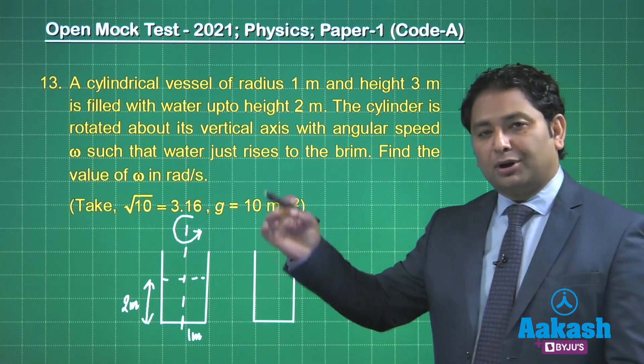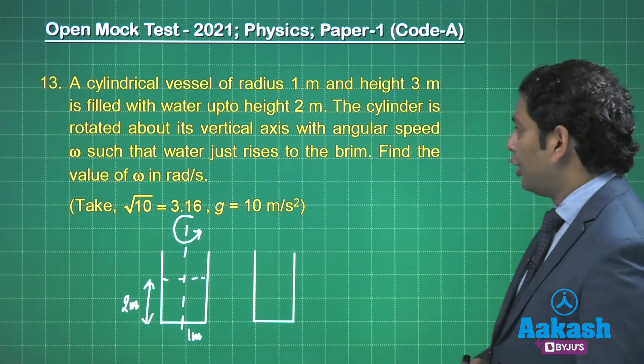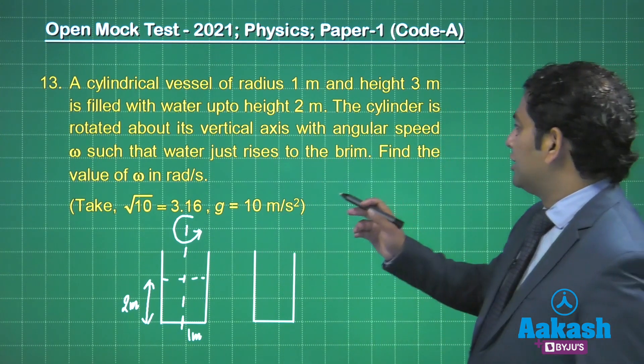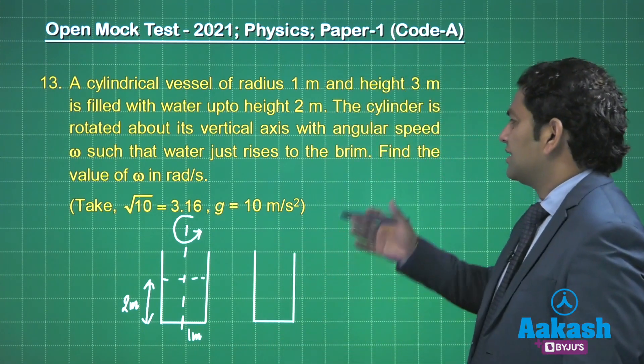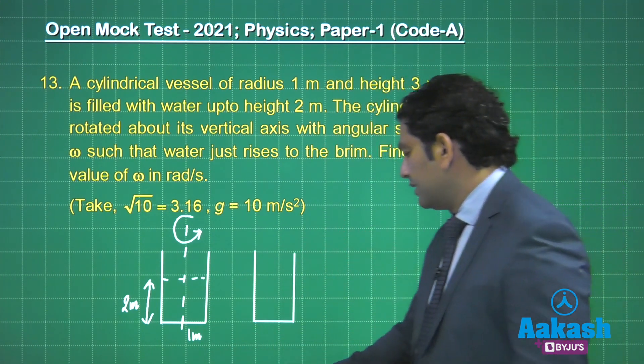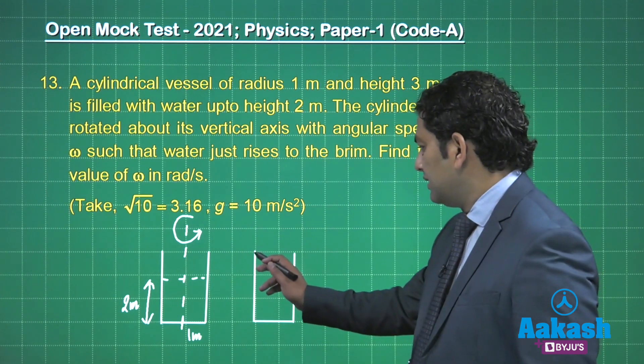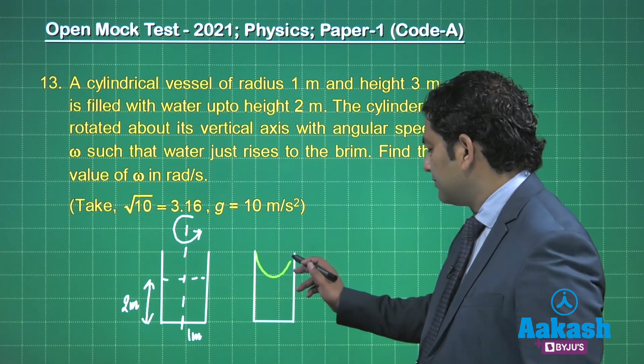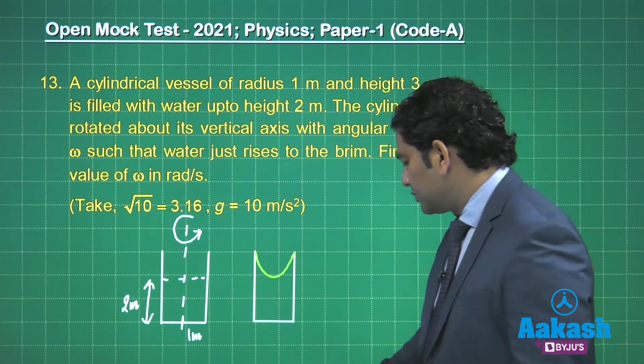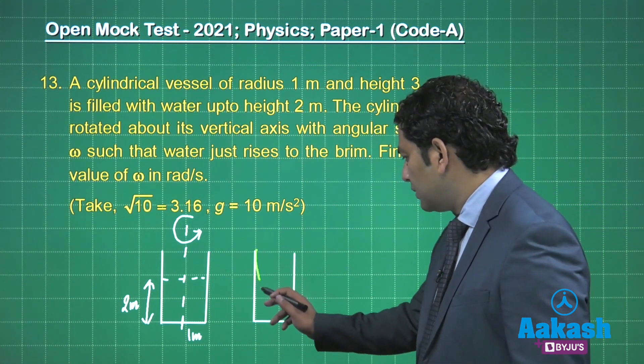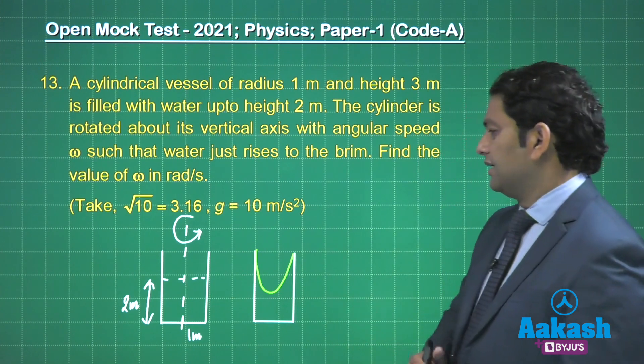The angular speed is ω such that water just rises to the brim, so it is going to be something like this. Please don't scale the figure, but if you want something like this, because this level has to be lower than the original one.